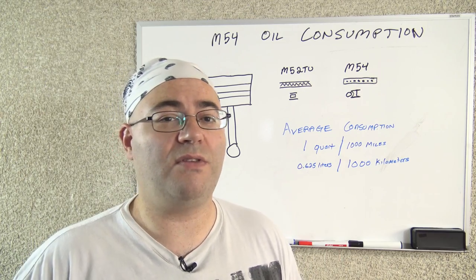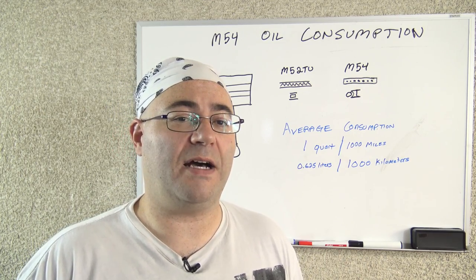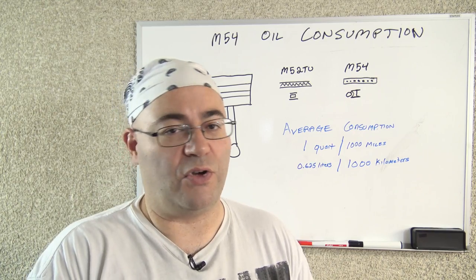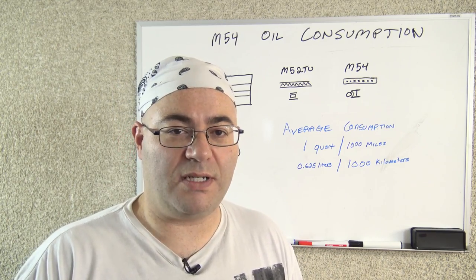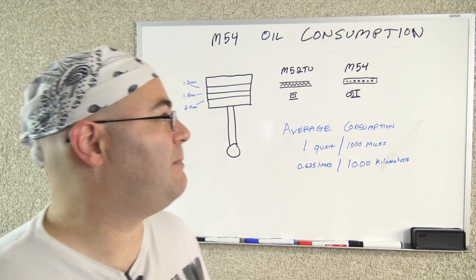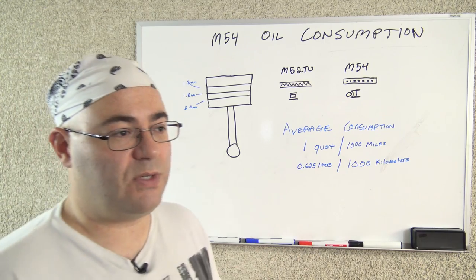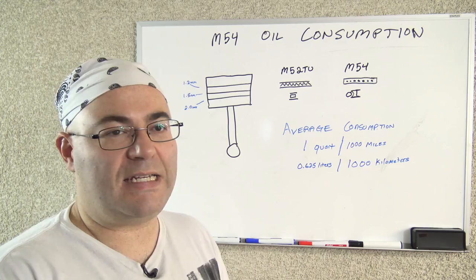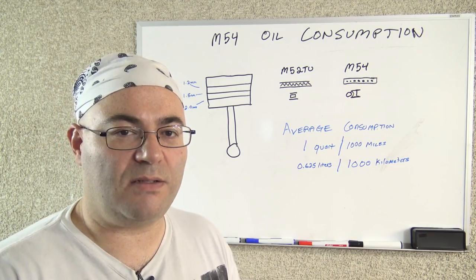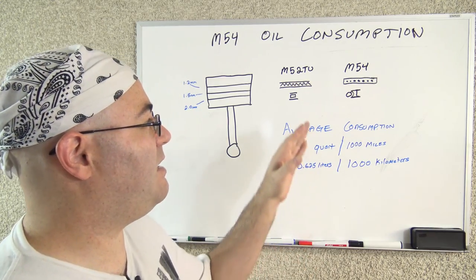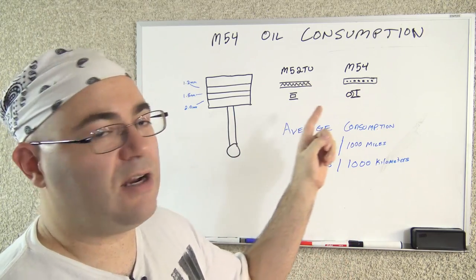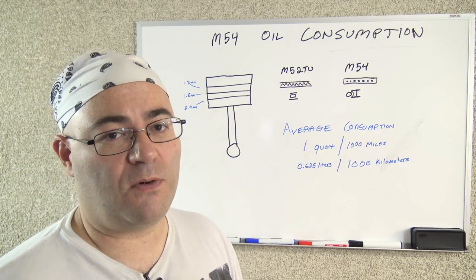chances are you have a 2001 to 2005 325 or 330 because those particular model cars have the M54 engine. The earlier cars, the 323s and the 328s, those were 98, 99, and 2000 model years. Those ones actually have the M52 TU engine, whereas the later model cars have the M54 engine.